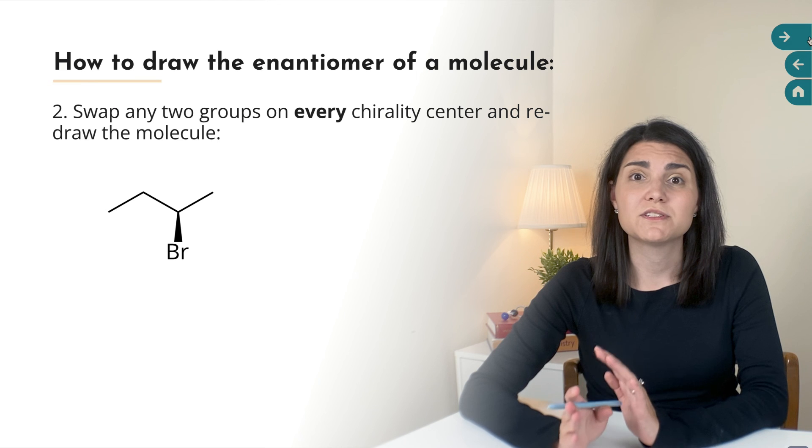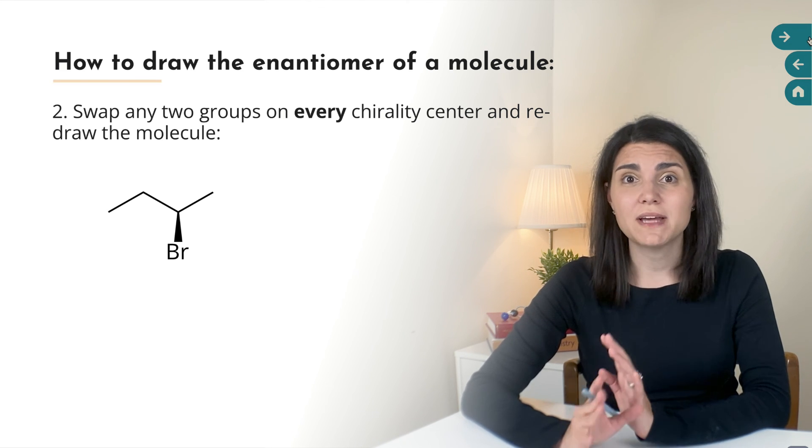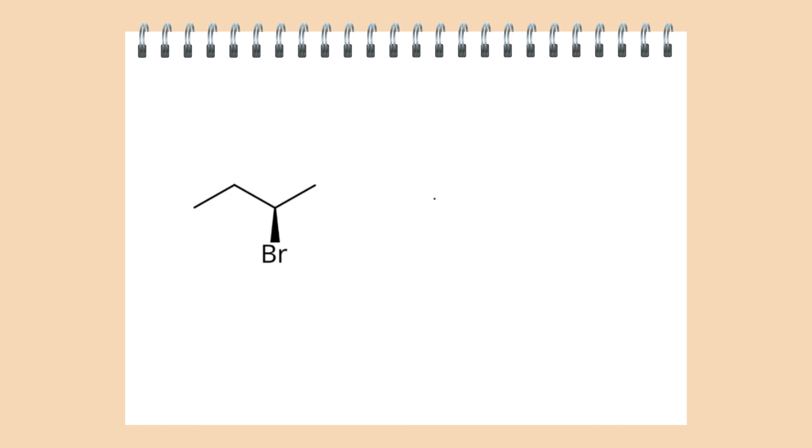The other way that we can generate an enantiomer is to swap two groups on each chirality center that the molecule has. This usually means changing what's on a wedge to a dash and what's on a dash to a wedge. For example, in this molecule, our bromine atom is on a wedge. So I'll redraw the molecule exactly the same, except we'll change the bromine to being on a dash. The other group we swapped was the hydrogen, but it's not shown in either drawing. Here's another example of the swap method. I'll redraw my cyclohexane. I'm keeping the groups in the exact same spot. I'm just swapping the direction of two groups on each chirality center. So the OH was on a wedge. It's now on a dash. And the Cl was on a dash. It's now on a wedge. Again, the other group that was swapped in both cases was the implicit hydrogen.